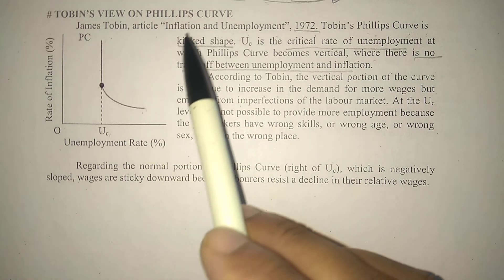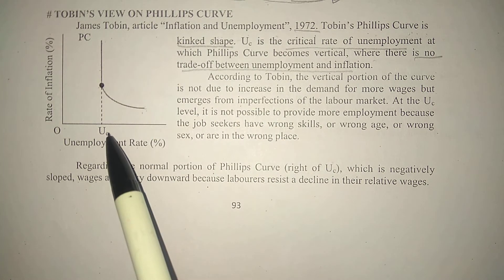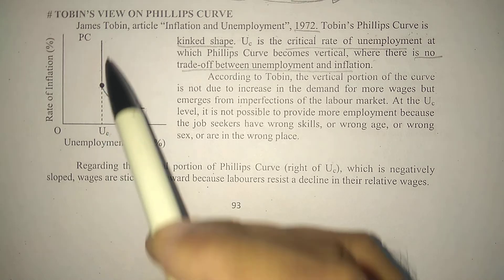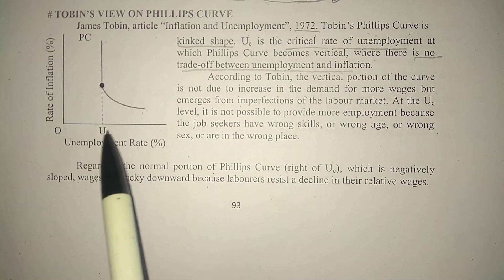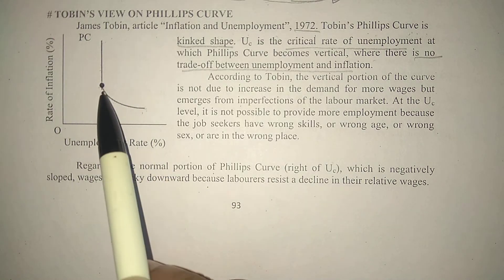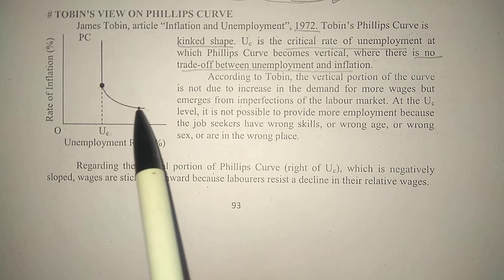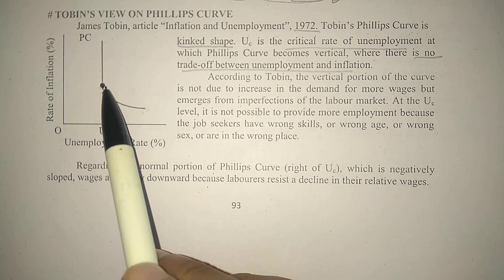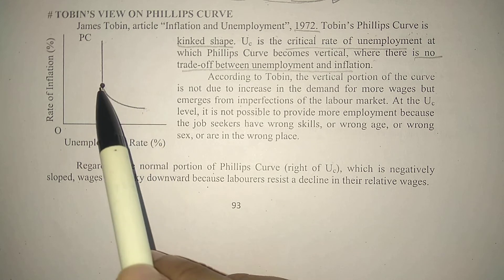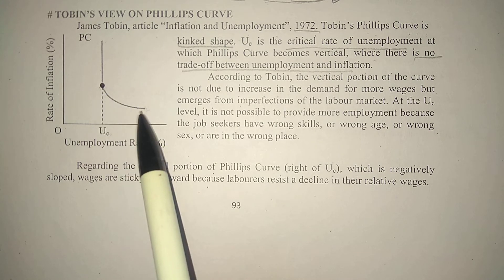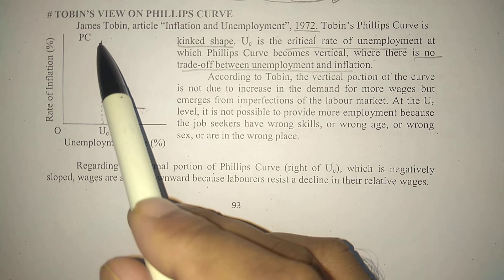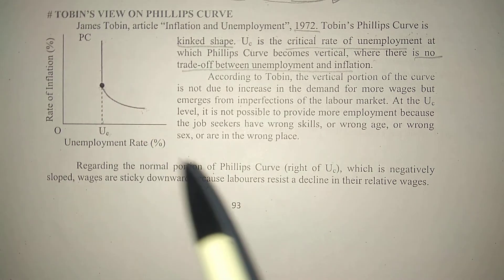According to Tobin, there is a critical rate of unemployment. At that point there is no trade-off, but to the right of that point this portion shows that a trade-off does exist. That portion behaves just like the normal Phillips curve. But at the critical rate, there is no trade-off because the curve becomes vertical there.